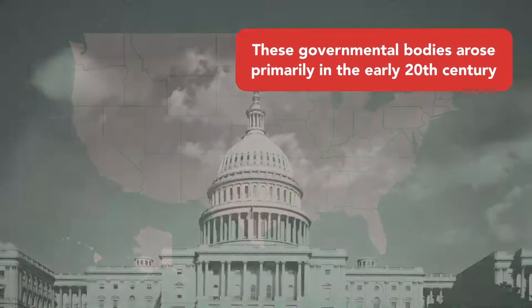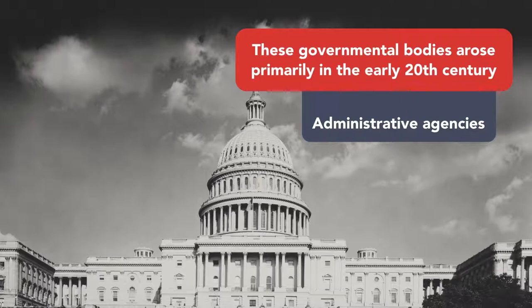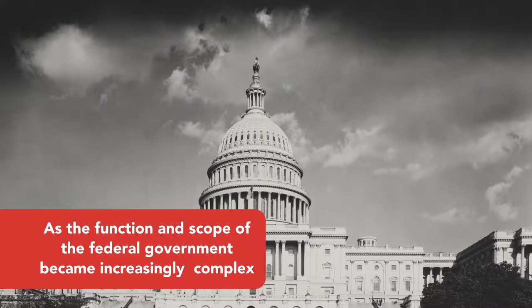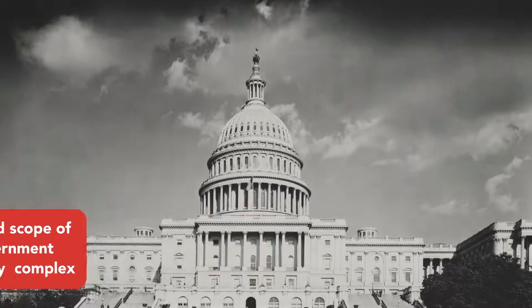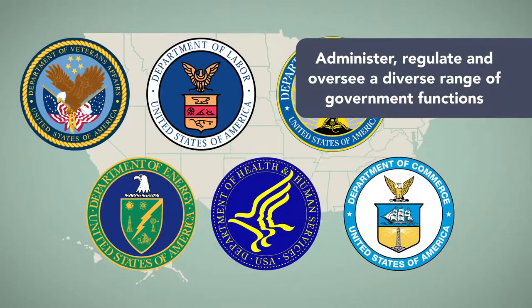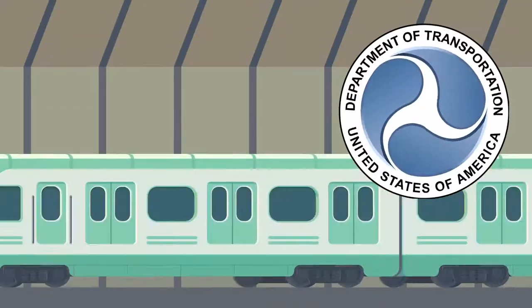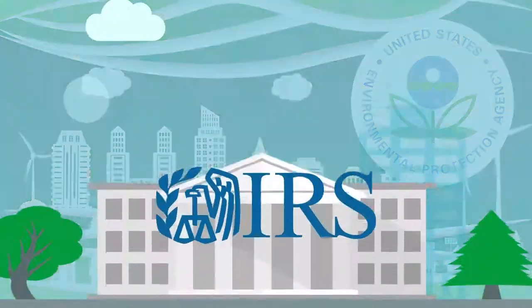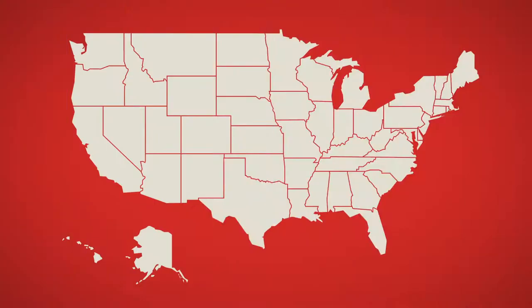These governmental bodies, generally referred to as the administrative agencies, arose primarily in the early 20th century as the function and scope of the federal government became increasingly complex. Today, the federal government has dozens of agencies that administer, regulate, and oversee a diverse range of government functions related to agriculture, transportation, the financial system, the environment, taxation, and housing, among many other important spheres in which the government plays a role.